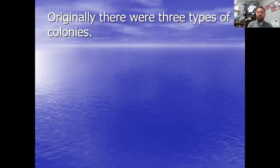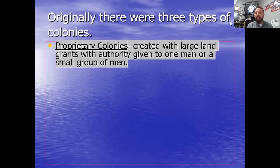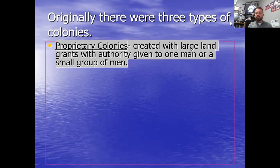There are three types of colonies. If you're going to start a colony, you needed to get permission from the king. The king of England had a lot of power, and you had to get his permission in order to start these colonies. Your first type were called proprietary colonies — created with large land grants from the king, and authority was typically given to one man or a small group of men. Massachusetts Bay Colony Plymouth is an example of a proprietary colony.